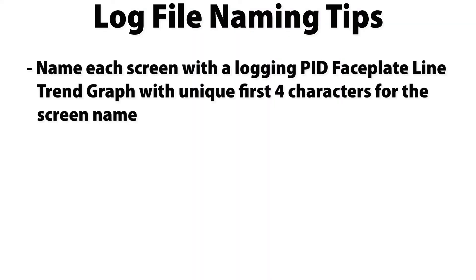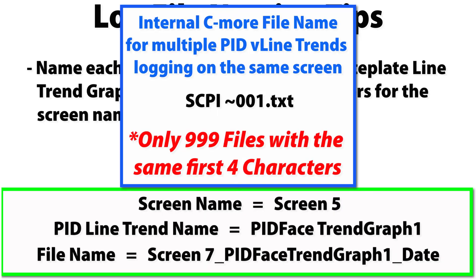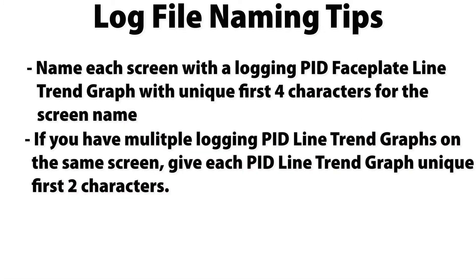So, if you need to log multiple PID faceplate graphs, make sure to name each screen that has a logging PID trend graph with unique first 4 characters of the screen name. Now, if you have multiple PID trend graphs logging on the same screen, the internal file will be the first 2 letters of the screen and the next 2 letters will come from the PID faceplate name. With this, just make sure that the PID faceplate graph names have unique first 2 characters.